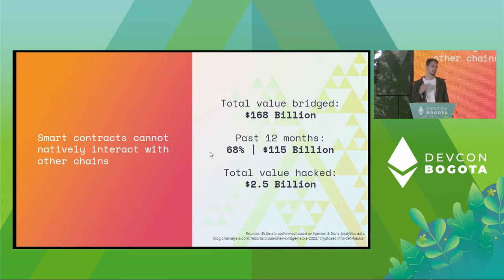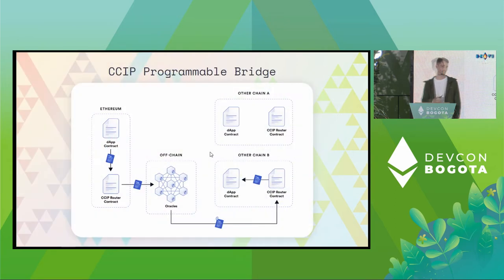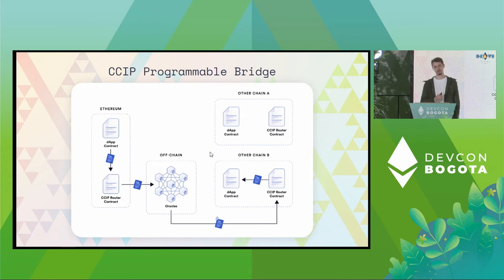This indicates that security is paramount, but unfortunately the current solutions are not yet up to the task. We at Chainlink are working on a solution to this problem, which we call the cross-chain interoperability protocol, CCIP.